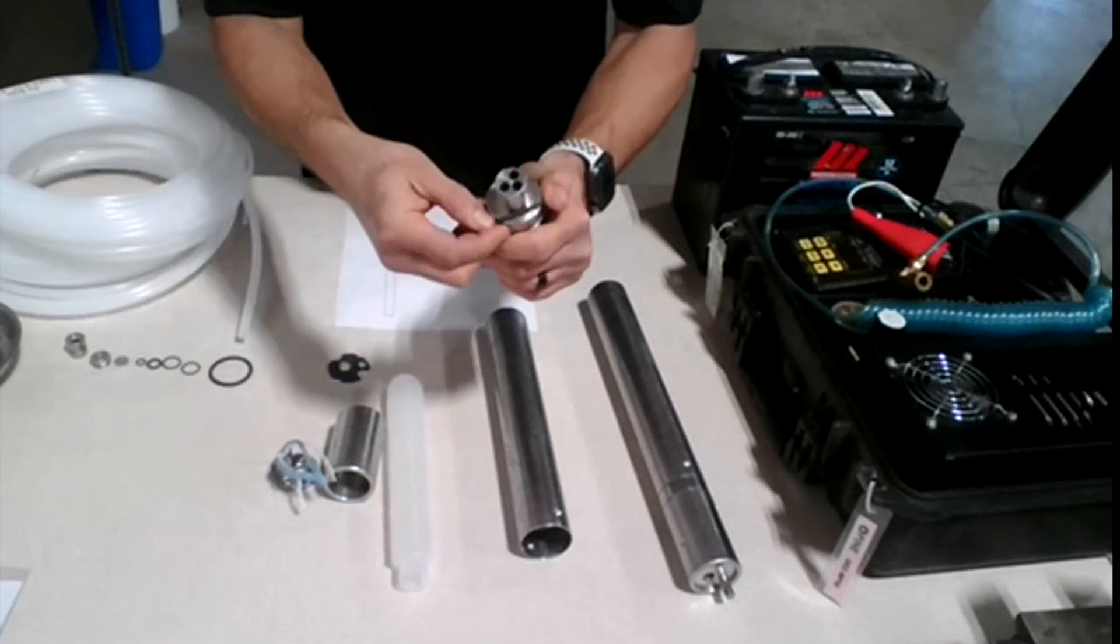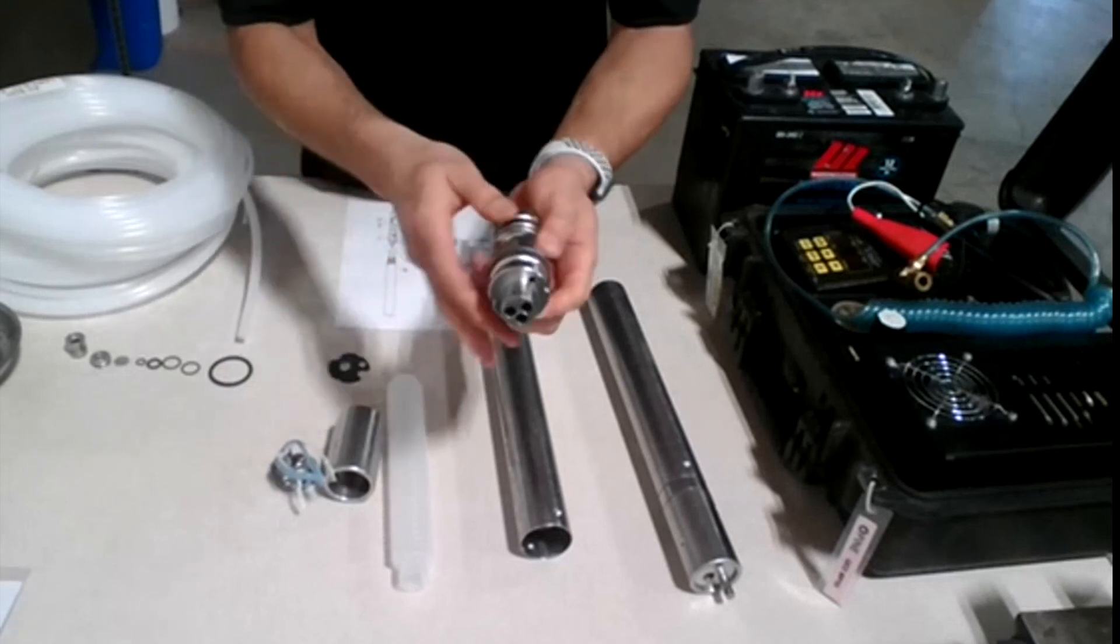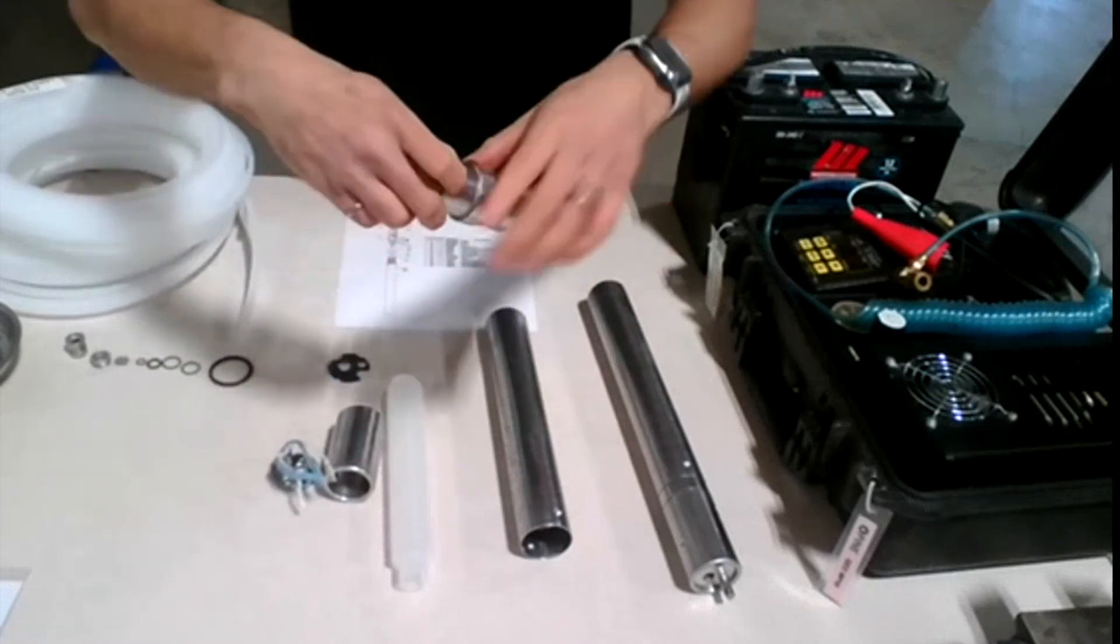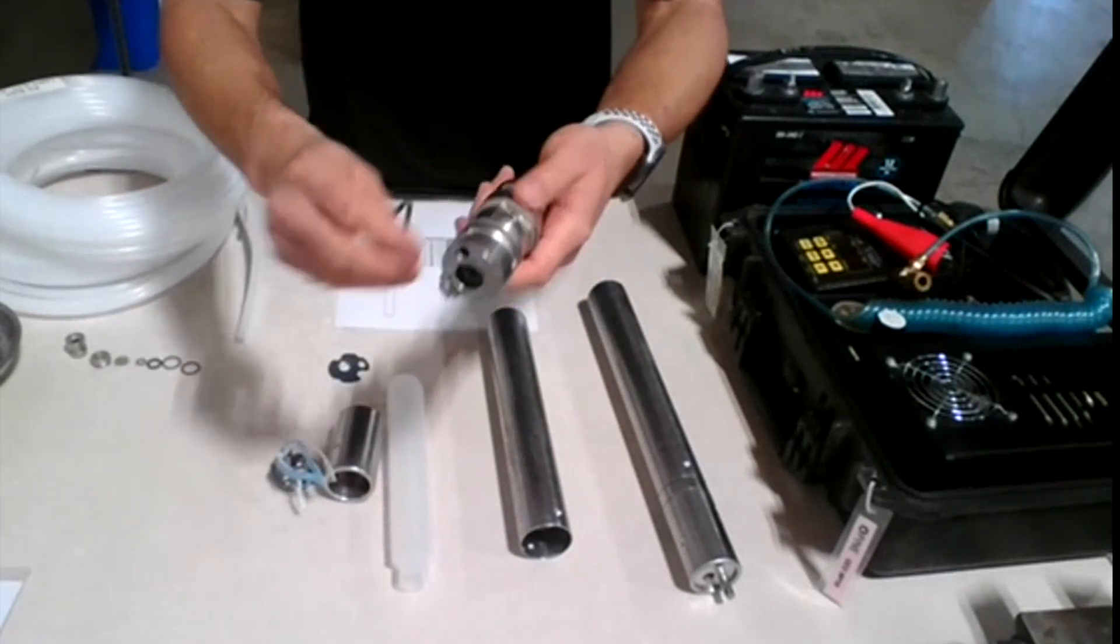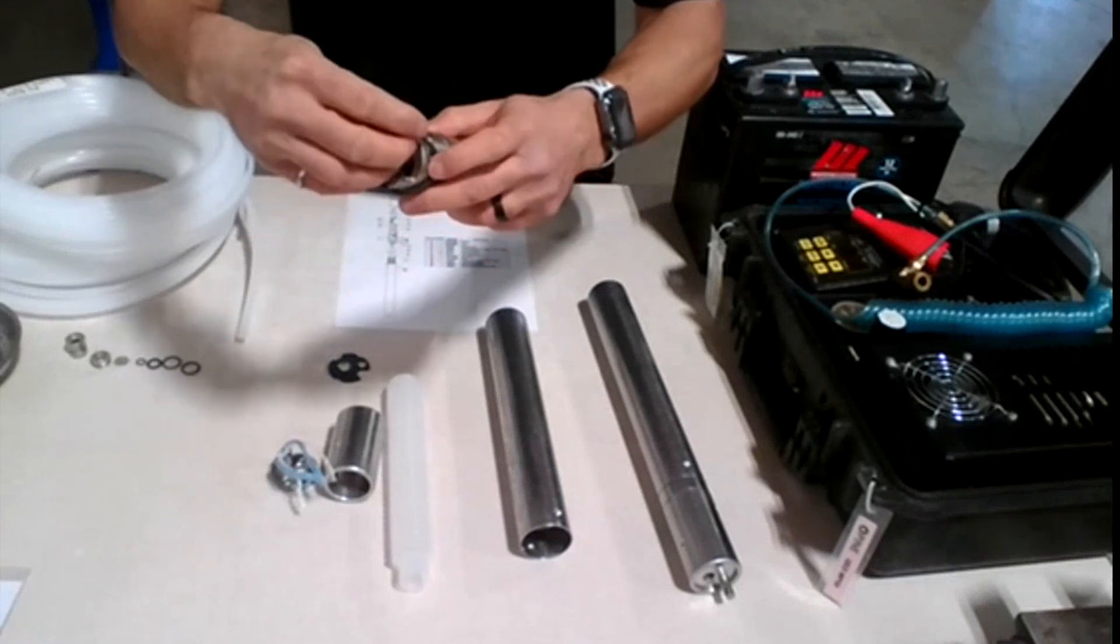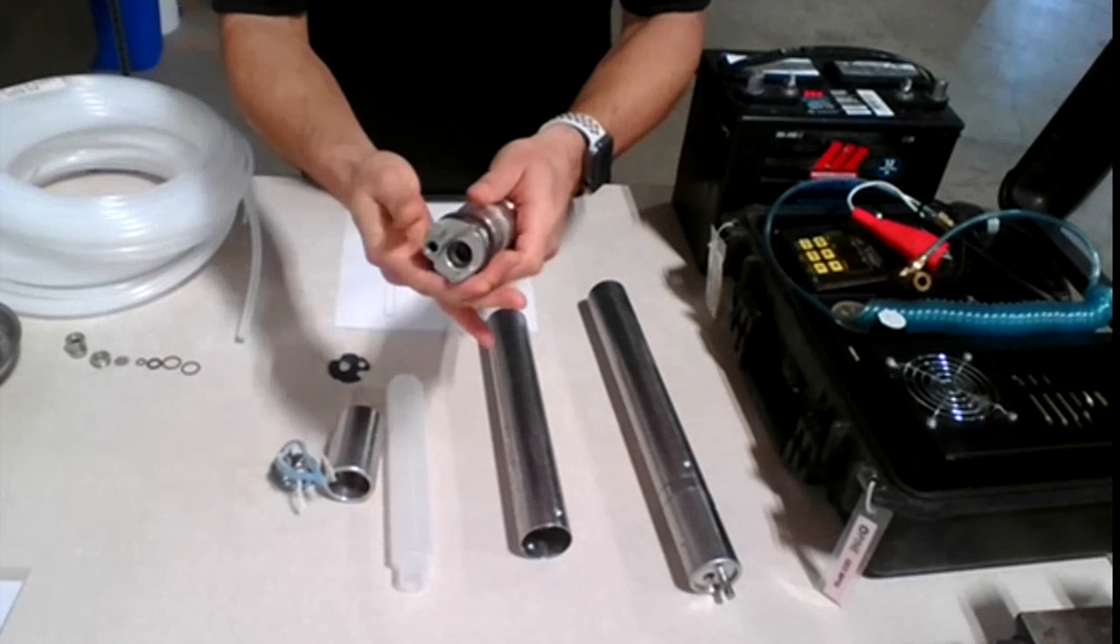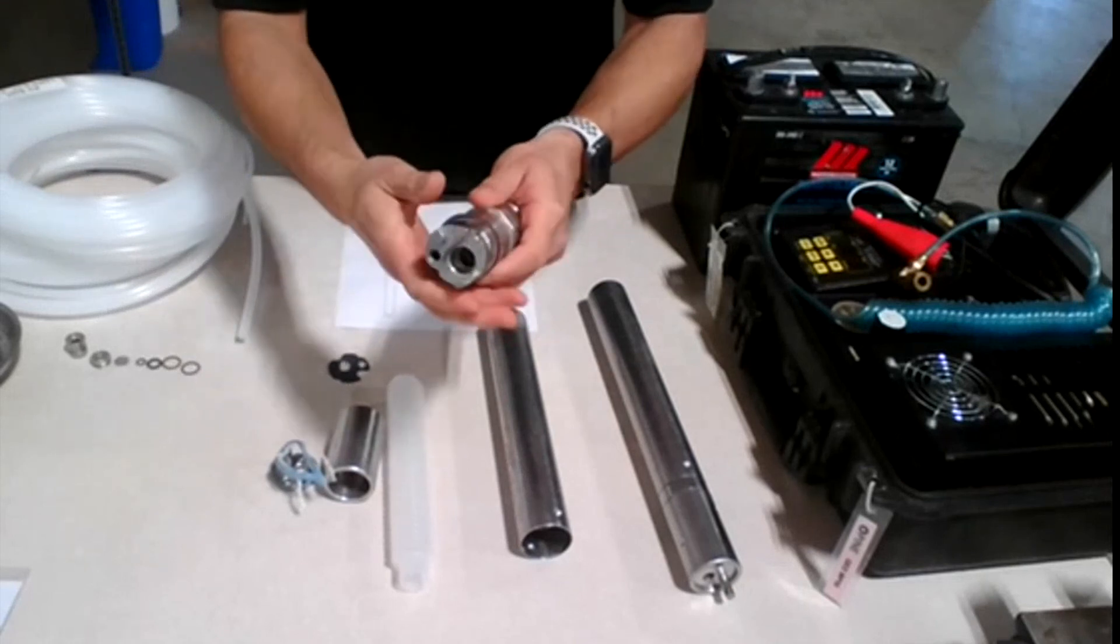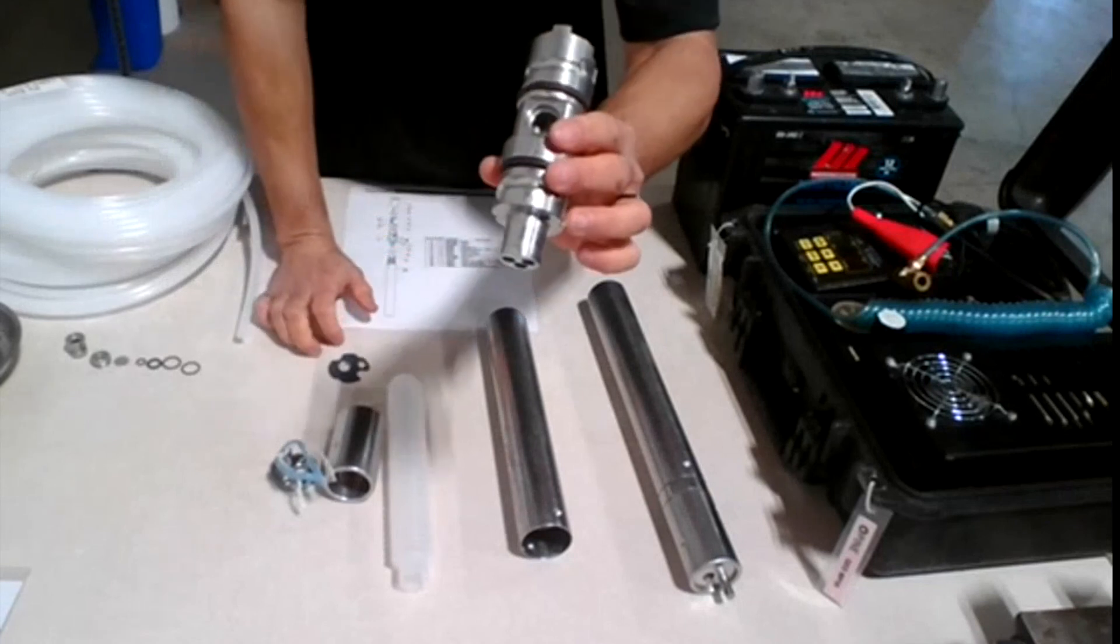So you're gonna install that annually, just like so. And put it in. Slide it all the way. So the first one is in. Now we're gonna do the second one for the second part. For the top part here. Same thing. You're gonna slide this one in. And make sure it sits properly. So now we got the two O-rings in.